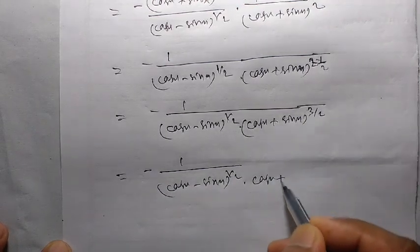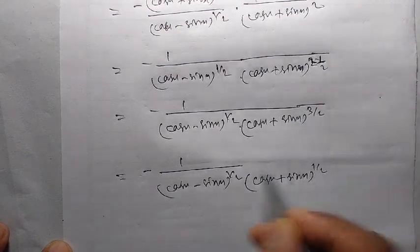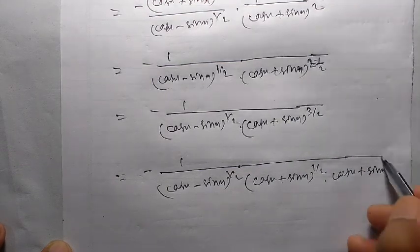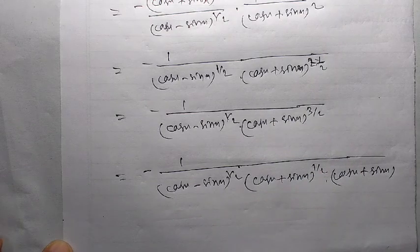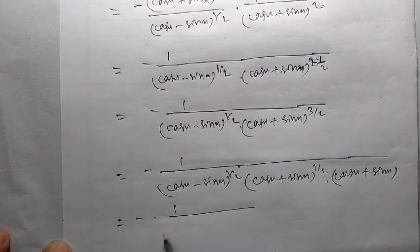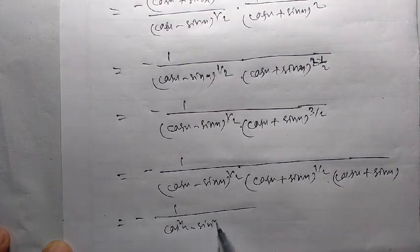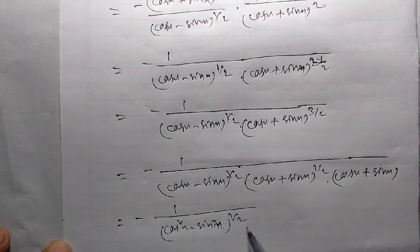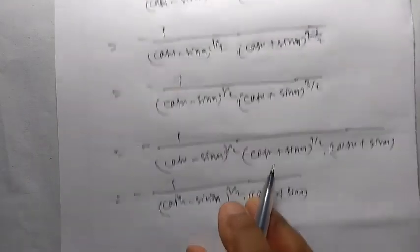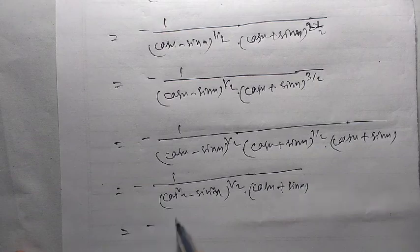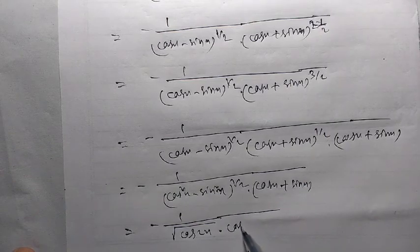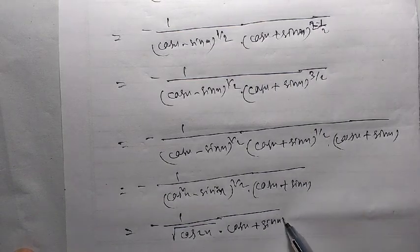This is equal to minus 1 divided by (cos x minus sin x) to the power half, again times (cos x plus sin x) to the power half, into (cos x plus sin x). The 3 by 2 power means half power and 1 power — these two become a²minus b² form. So we get 1 by (cos²x minus sin²x) to the power half, into (cos x plus sin x). Since cos²x minus sin²x equals cos 2x, the result is minus 1 by root cos 2x into (cos x plus sin x).